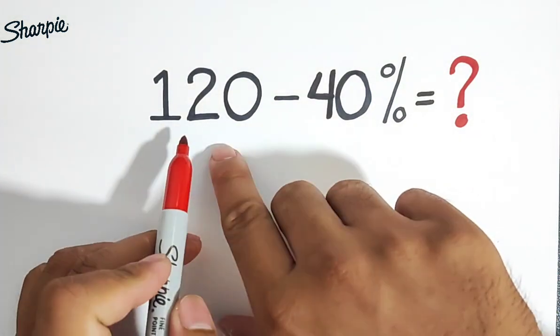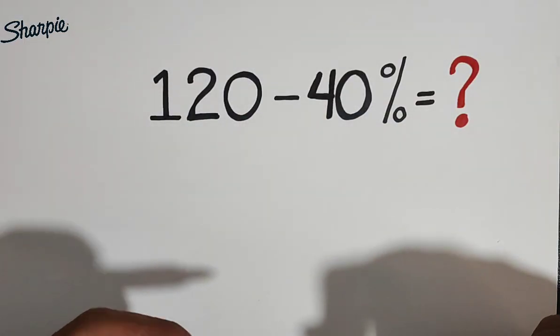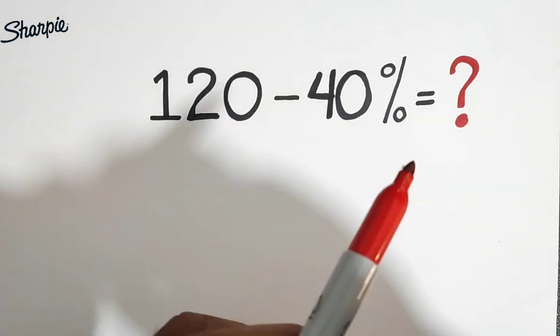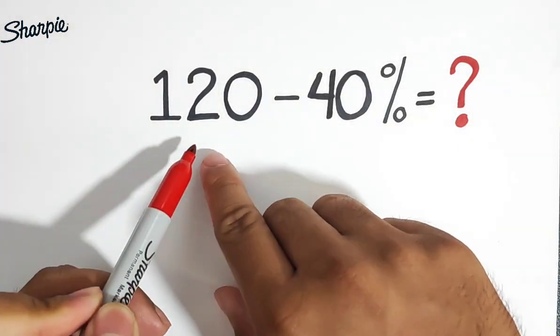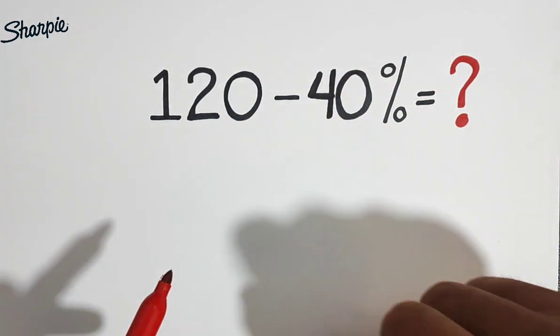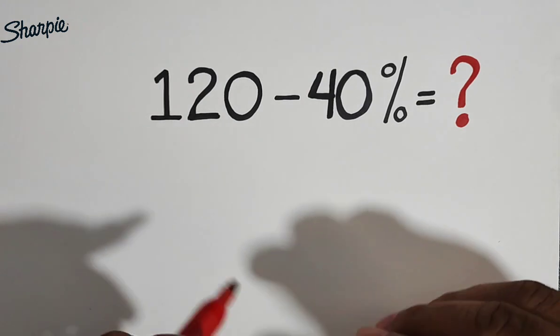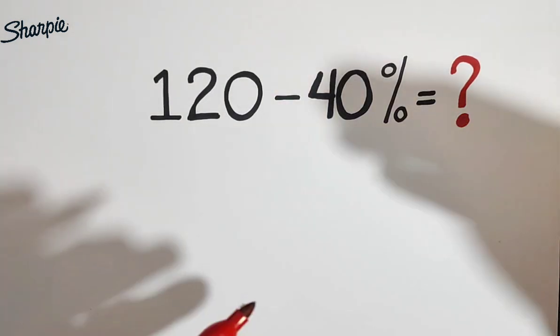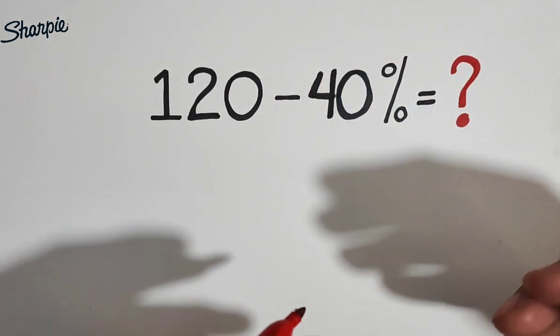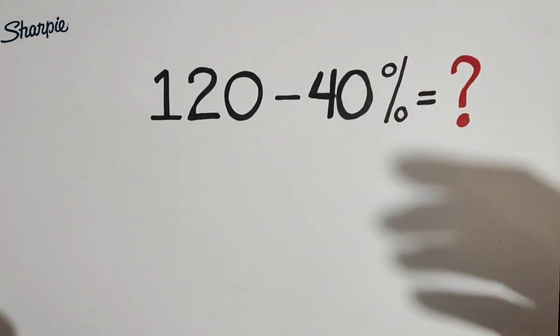So we have here 120 minus 40%. The normal thing we do here is that we will get first the 40% of 120 and then we will subtract that 40% from 120. So here's a trick on how to answer this kind of problem in an instant. But you need to practice later on using different examples.